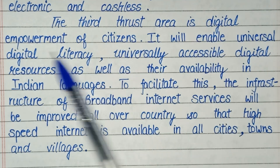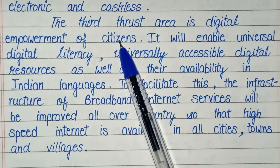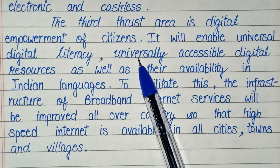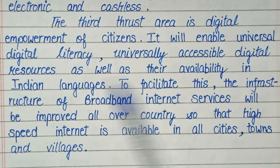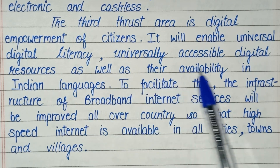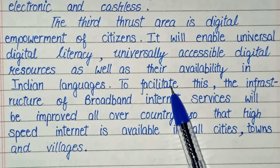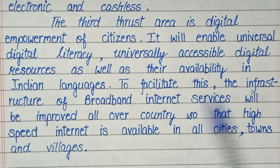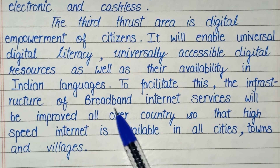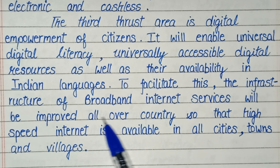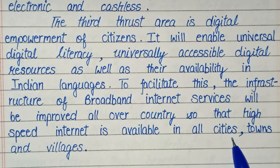The third thrust area is Digital Empowerment of Citizens. It will enable universal digital literacy, universally accessible digital resources, as well as their availability in Indian languages. To facilitate this, the infrastructure of broadband internet services will be improved all over the country so that high-speed internet is available in all cities, towns, and villages.